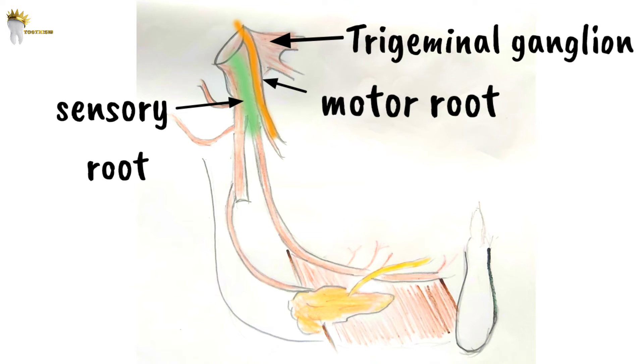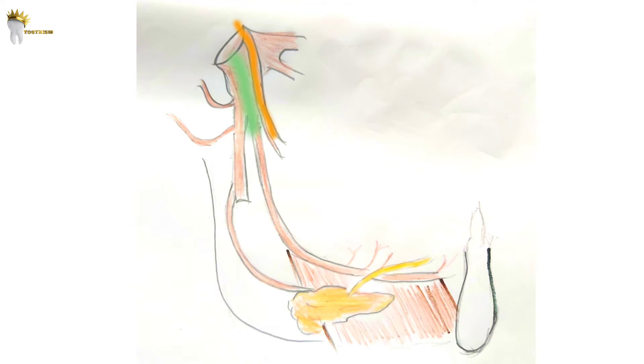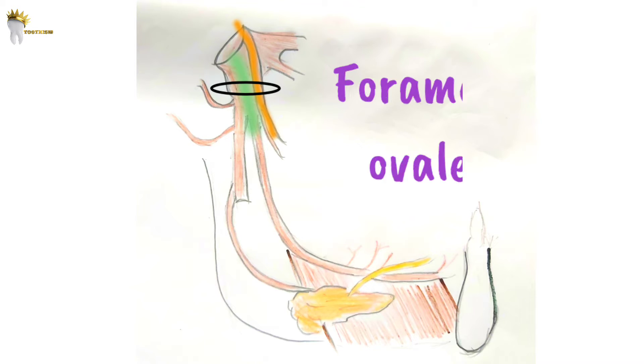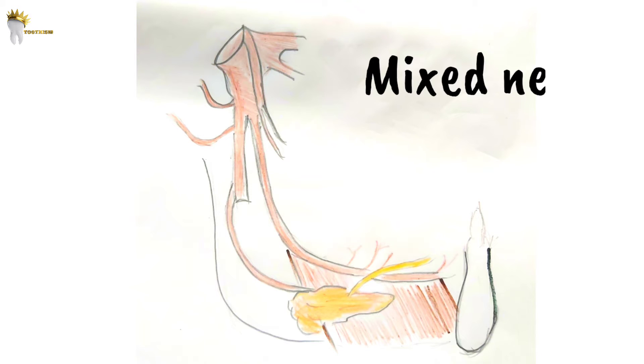At the trigeminal ganglion, the motor root travels alongside the third division of the sensory root, which is the mandibular nerve. Both take a downward path and exit through the foramen ovale. After exiting the skull, the motor root unites with the mandibular nerve and forms a single nerve trunk. This is why the mandibular nerve is called a mixed nerve — it has both motor and sensory components.